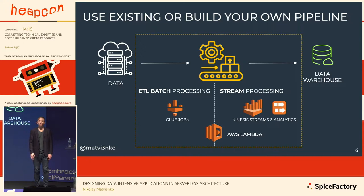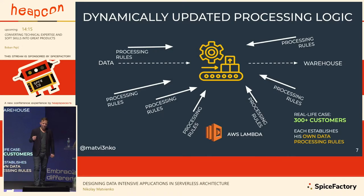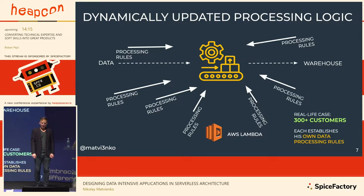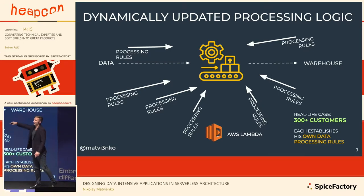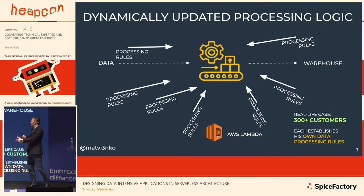You can use existing processing services like AWS Glue for ETL pipelines, or Kinesis plus Kinesis Analytics and Athena for stream processing. But if the logic is not simple and quite complicated, you can use AWS Lambda and build your own pipeline. We had a project where we had to develop a platform for 300 plus customers, each with their own data processing rules that could be updated or added on the fly — plus we had to reprocess data on ad hoc requests.